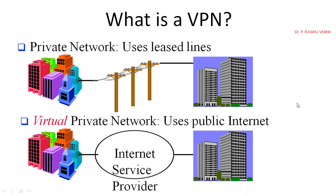For example, a business person, marketing executive, or employee may go around the country or out of the country, but still wants to establish communication with the company server. In such a case, they cannot have leased lines wherever they go. Obviously, they have to use the public infrastructure like the internet. By using the public infrastructure, that employee will create a secure private channel to communicate with the company server. This way of doing it is called the virtual private network.